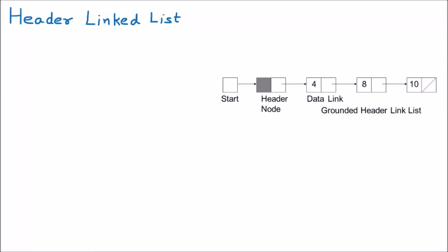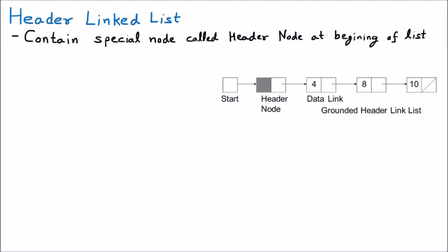We are discussing the header link list. As we know, a linked list is a combination of nodes where every node has two parts: the info part and the link part, with the link pointing to the next node. In the header link list, we have one special node called the head node, which is added previous to the normal nodes. It contains a special header node at the beginning of the linked list.